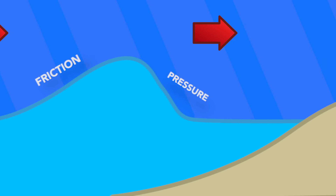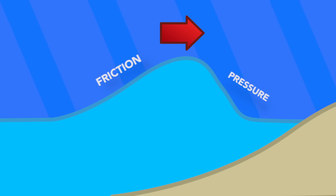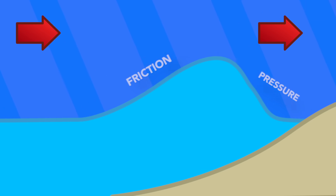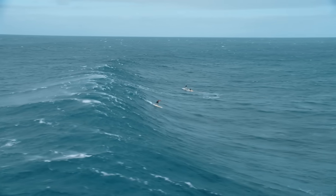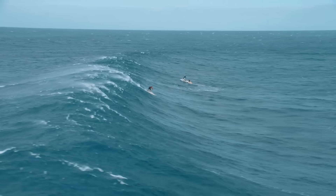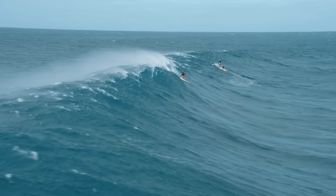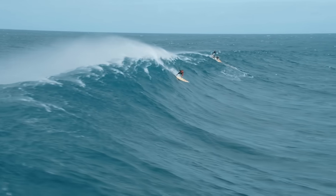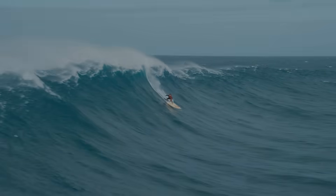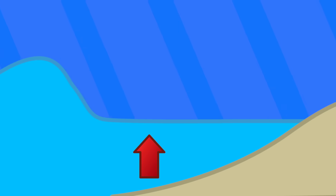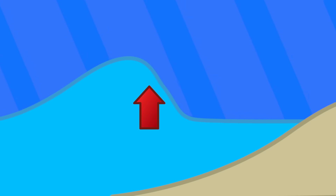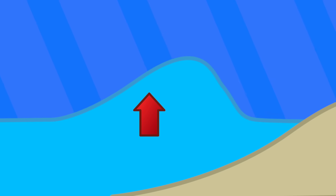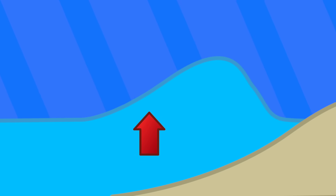These transfers of energy cause disturbances in the water that are carried through the water. One interesting thing about ocean waves is that the water isn't actually moving. Rather, it's the wave that moves through the water, meaning the water itself essentially moves up and down, reacting to the wave energy moving through it.